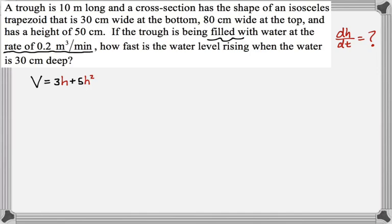So we know that the trough is being filled at a rate of 0.2 cubic meters per minute. So that's dV/dt, and it's filled, so it's positive. And we are looking for dH/dt when the water is 30 centimeters deep, but I'm doing everything in meters. So I'm going to say that H is 0.3 meters.